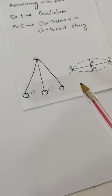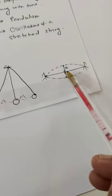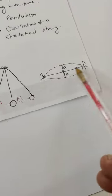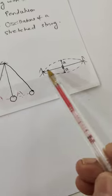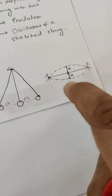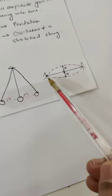Similarly, suppose I take a string tightly tied between two supports and pluck it from the middle. Here it will vibrate and form a loop something like this. So this is the amplitude.